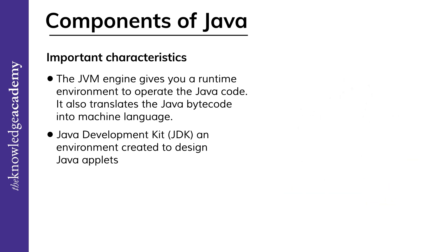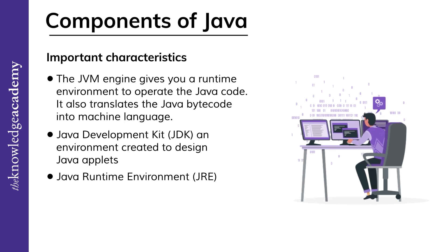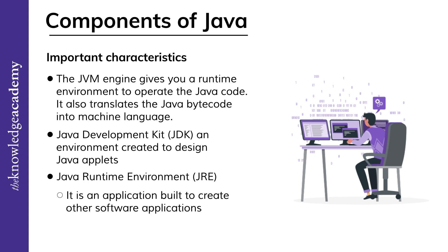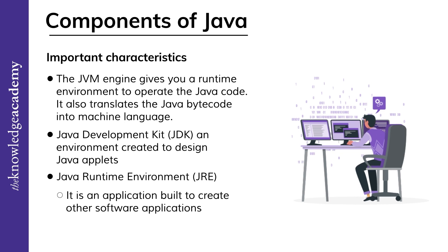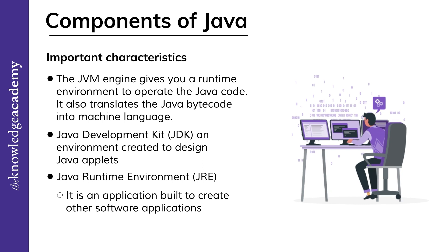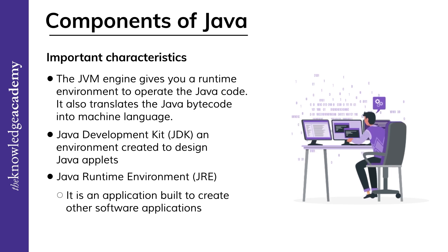Last but not least, we have the Java Runtime Environment, or JRE, which is a part of the JDK. It is an application built to create other software applications. The JRE behaves as a translator between the OS and the Java program. The JRE includes the JDK, class libraries, and loader class, which means you need the JRE if you wish to run a Java program. If you wish to run Java applets on your system, you must install the JRE. The presence of the JRE on any system eliminates the need for modifications when running Java programs on the OS. Furthermore, the JRE contains important components such as development tools, deployment solutions, language and utility libraries, and integration libraries.